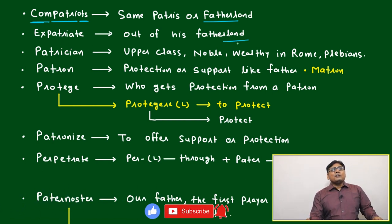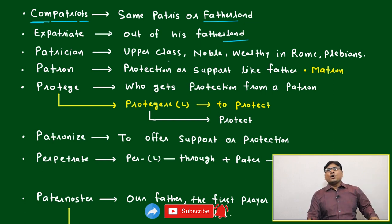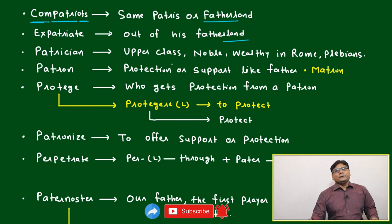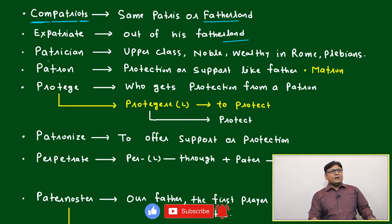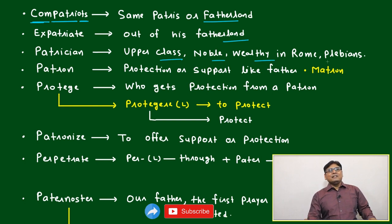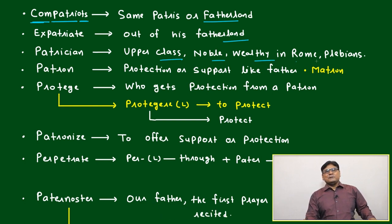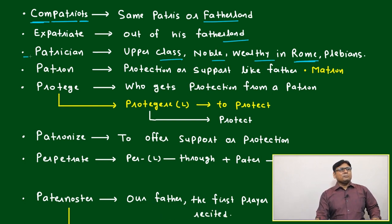Expatriate means out of the fatherland — someone who has gone away due to any reason. Patrician means upper class, noble, wealthy — especially in Rome, it is generally called patrician.